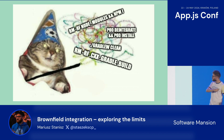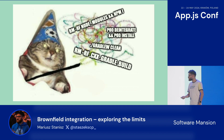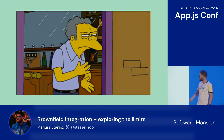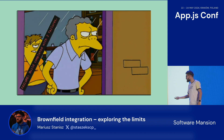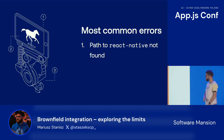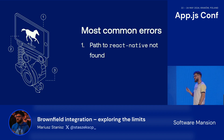It looks like this: you get rid of one error and you end up with two more. That's basically how it looks from a software developer's perspective, at least at the beginning.